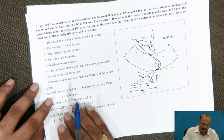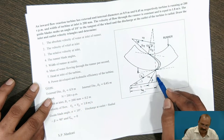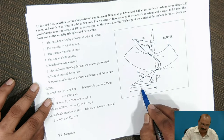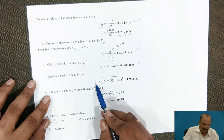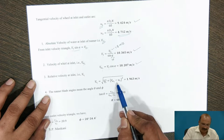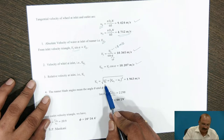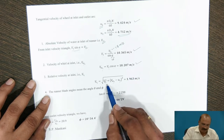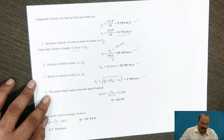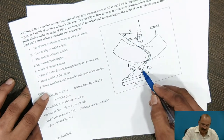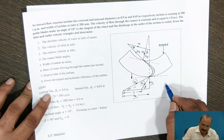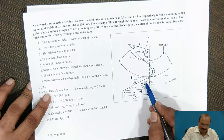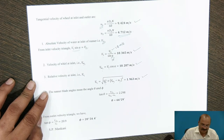For the relative velocity at inlet Vr1, we apply the Pythagorean theorem: Vr1 = √(Vf1² + (Vw1 − U1)²). Substituting Vf1 = 1.8 m/s, Vw1 = 10.207 m/s, and U1 = 9.424 m/s, we get Vr1 = 1.963 m/s.